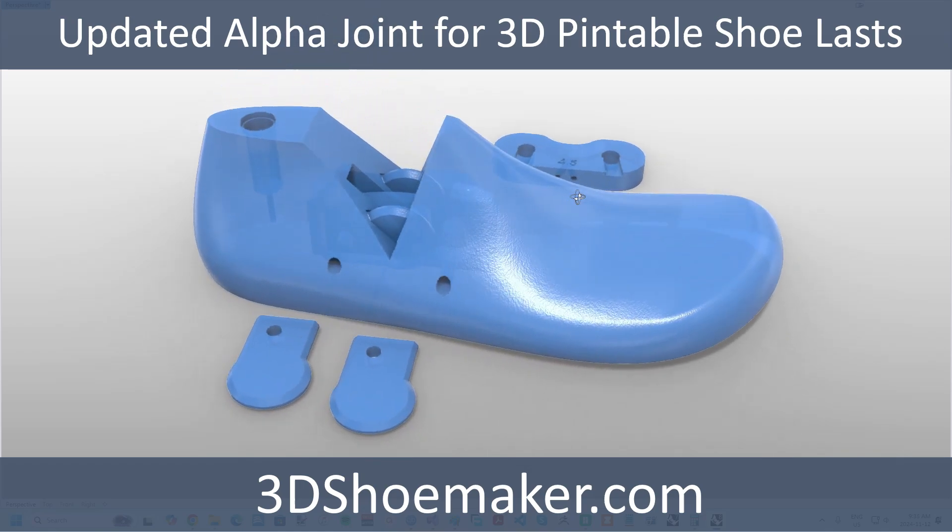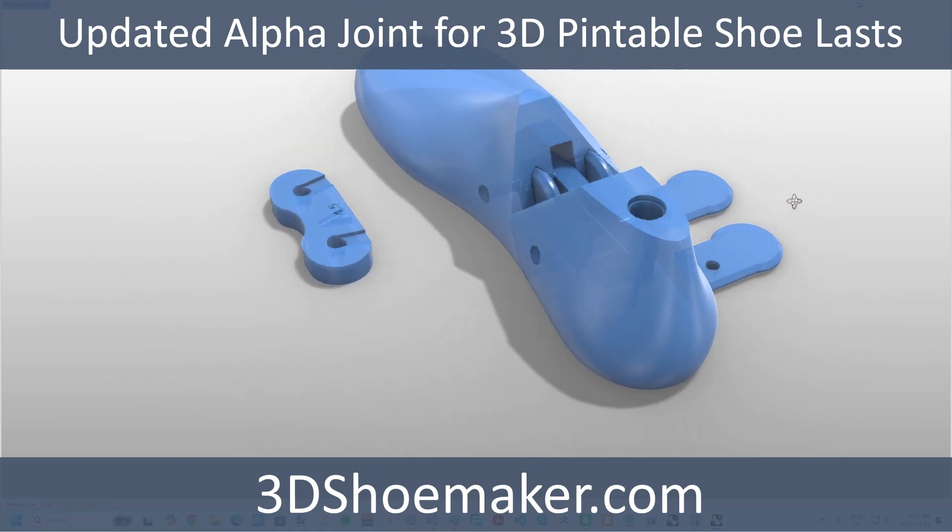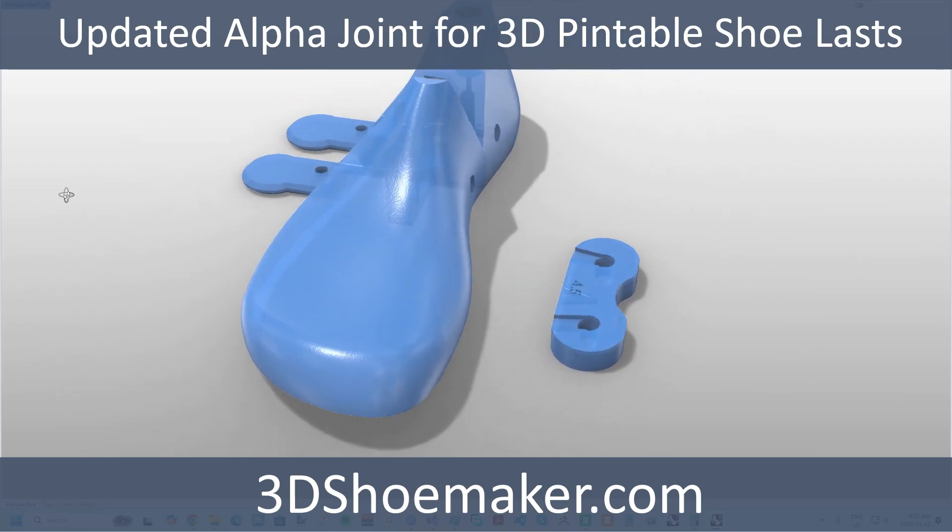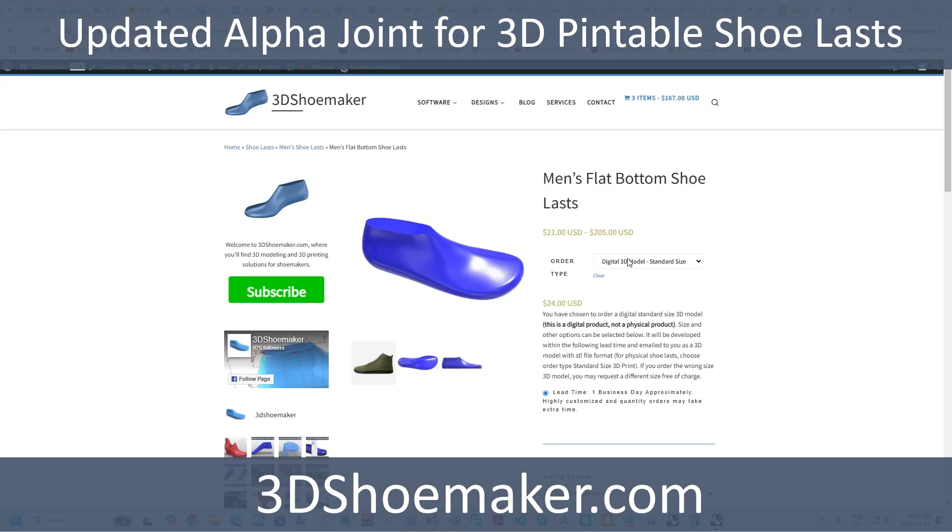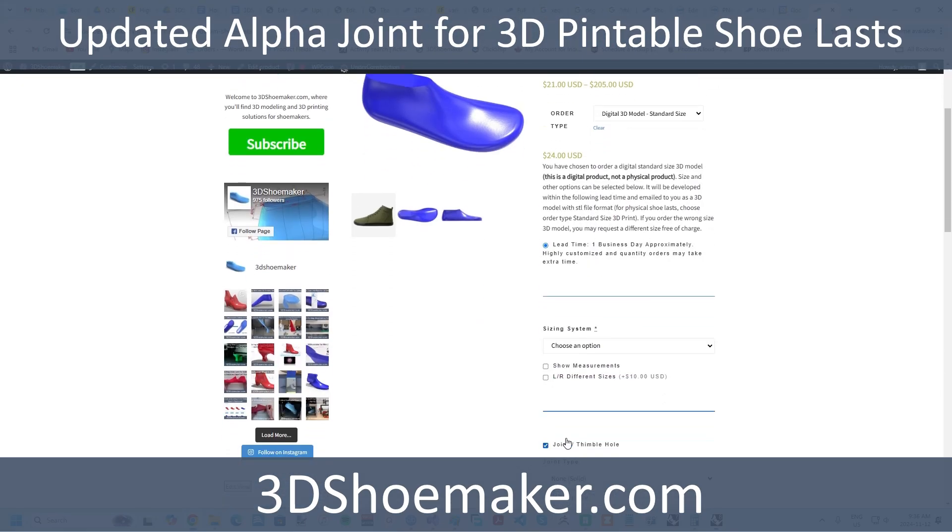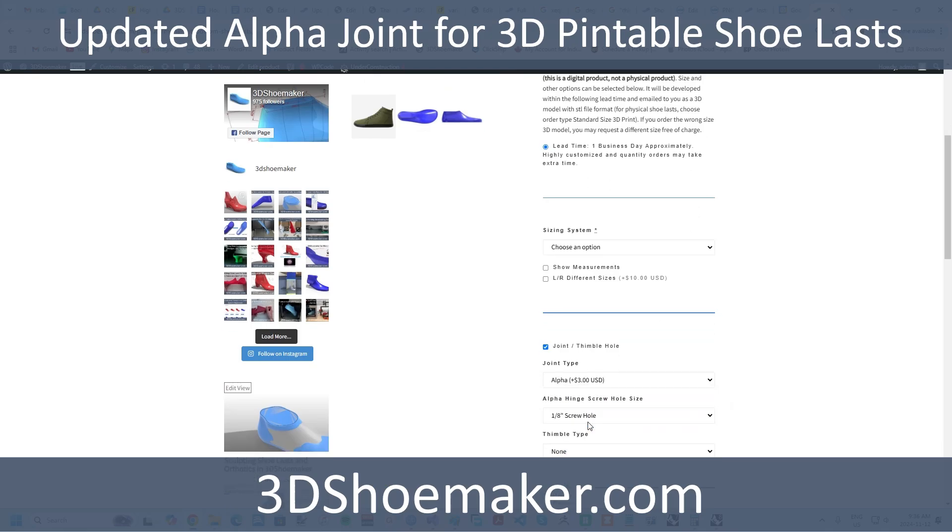This video is just a quick update on a design change for the 3D printed shoe last alpha joint, which is also known as a V-Hinge. These joints are available with both physical and digital shoe last models here on 3DShoemaker.com and can even be designed using the 3DShoemaker plugin for Rhino.